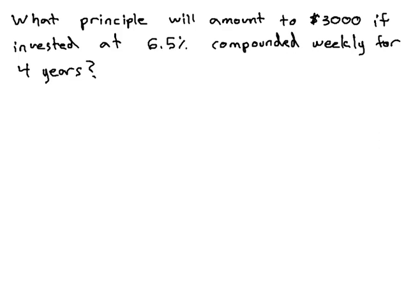In this video, we're going to ask what principal amount of money is going to amount to $3,000 if we invest it at 6.5 percent compounded weekly for four years.